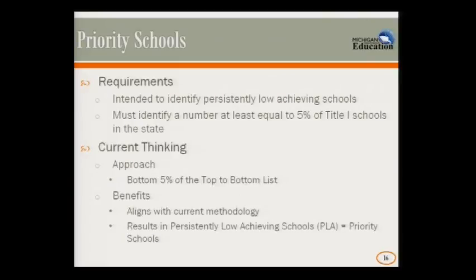For priority schools, intended to identify persistently low-achieving schools, our current thinking is that we would simply take the bottom 5% of the top-to-bottom list. A couple of benefits from that: one, it aligns with our current methodology, and two, it results in persistently low-achieving schools being identified as priority schools, so we're aligning our systems.